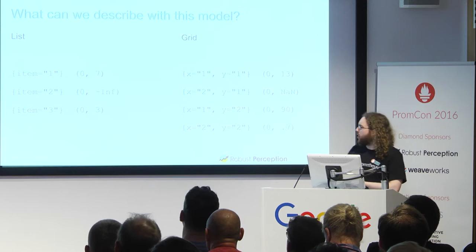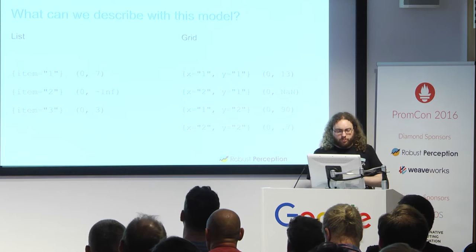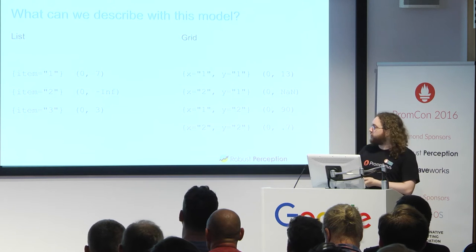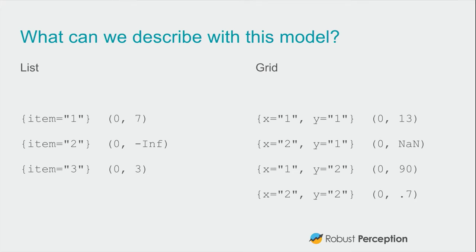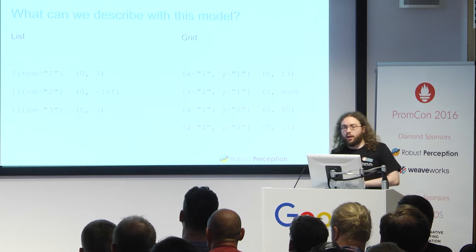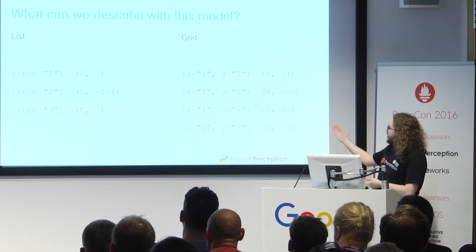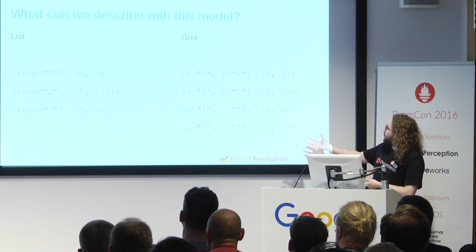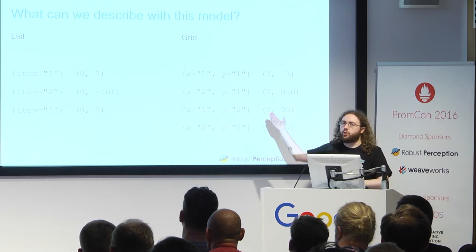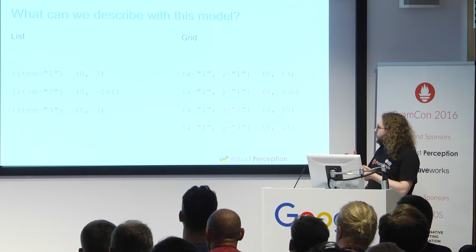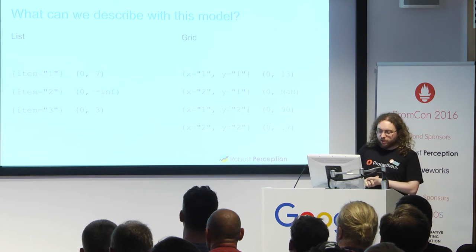So what can we describe with this model? From a computer science standpoint, we can do a list by using these labels to number things. We're not using the int64 — it's using a float. We'll note it supports full float64, so you can have NaN, you can have inf. You can also do a grid by going two-dimensional, and you can do all your other structures like this.